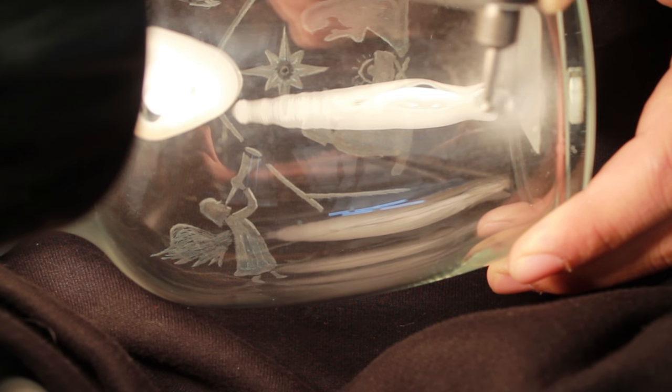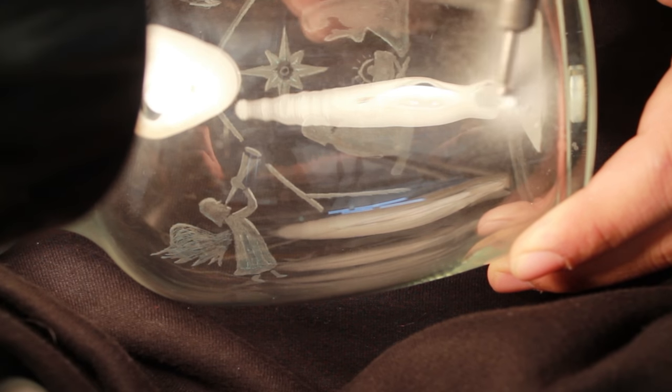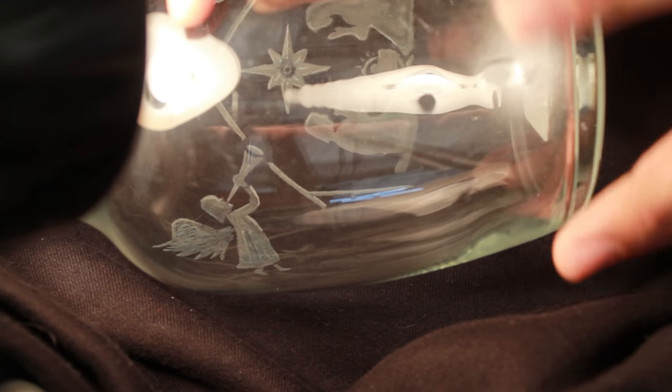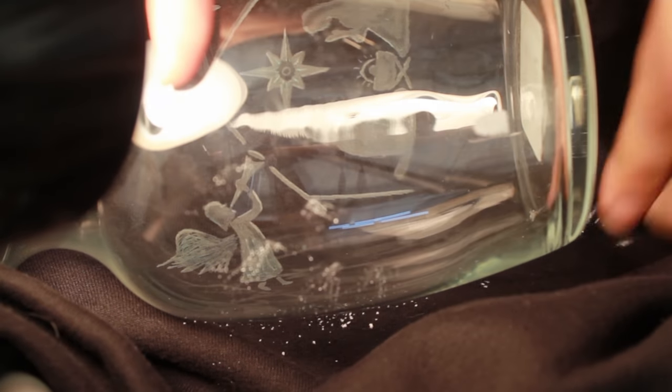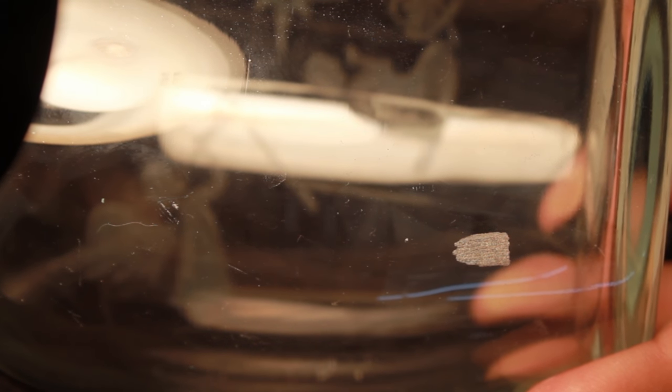The first burr that we're going to take a look at here is our ball diamond burr. You've seen this on all my videos so far. It's one of the bits that I use the most. It's used for highlights.